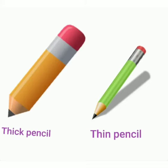Now what are these? These are pencils. Very good. The pencil which is in yellow color is a thick pencil, and the pencil which is in green color is a thin pencil. Thick pencil and a thin pencil.